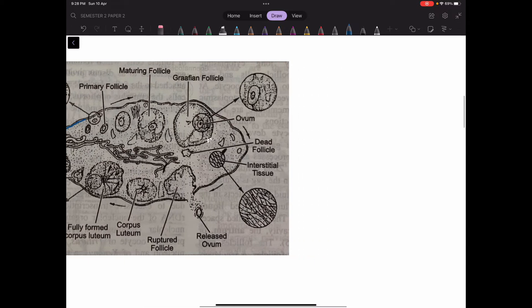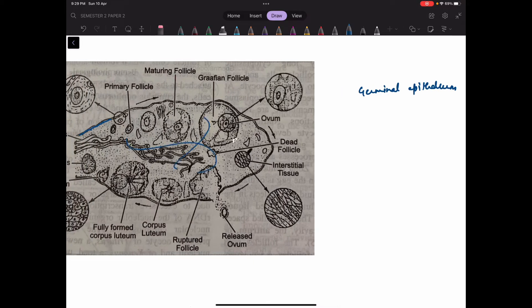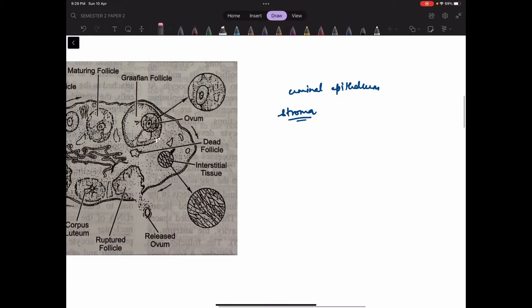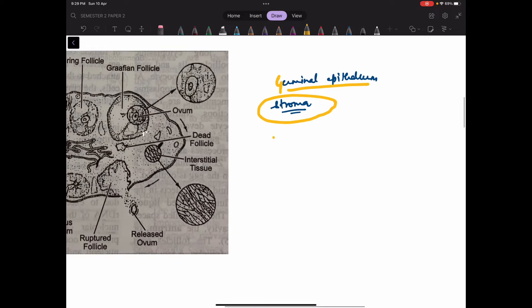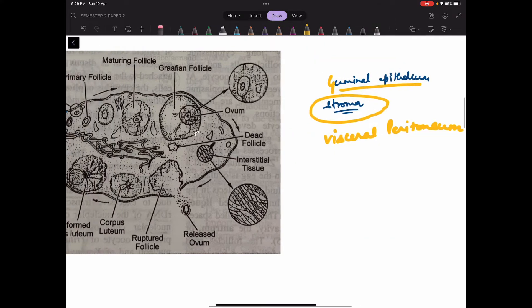This lining is known as germinal epithelium. This germinal epithelium has enclosed the entire center. This is a connective tissue which we call as stroma. This germinal epithelium is enclosing the stroma.